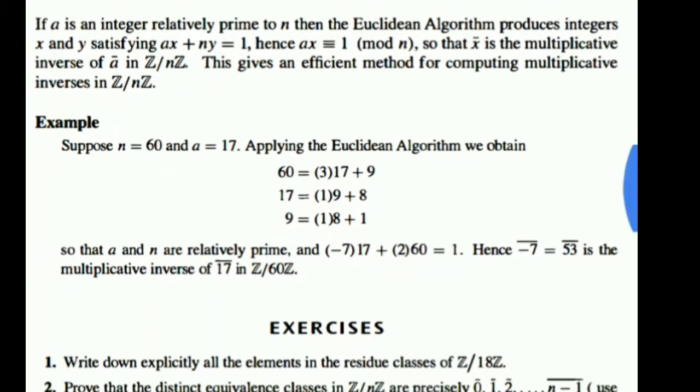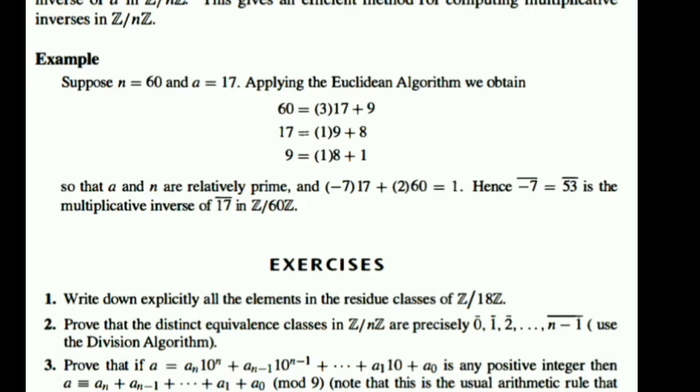This example shows finally in Z/60Z, the element class 17 has multiplicative inverse class 53. Whenever we apply the Euclidean algorithm, we see that minus 7 times 17 plus 2 times 60 is 1. Therefore minus class 7, that is class 53, is the multiplicative inverse of class 17 in Z/60Z.